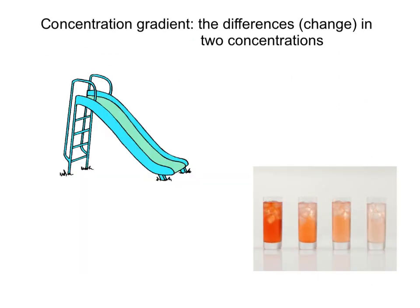Now that we know what a concentration is, we can talk about a concentration gradient — make sure this is in your notes. A concentration gradient is the difference or change between two concentrations. Looking again at our Crystallite example, this one had a high concentration and this one had a low concentration, with the others mixing in between in the center.